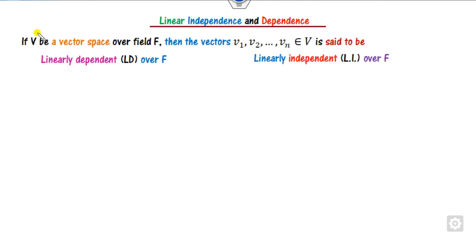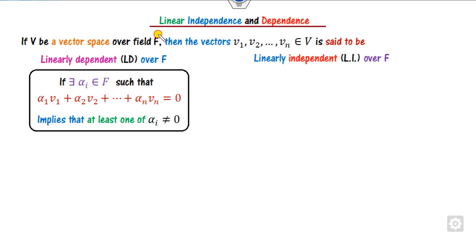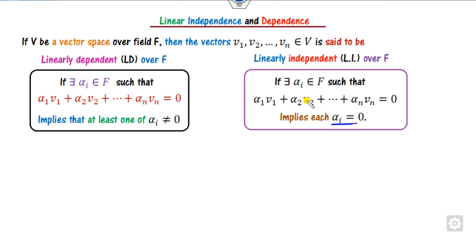Let V be the vector space over field F. Then n vectors v1, v2, ..., vn are said to be linearly dependent or linearly independent over this field as follows: if there exist scalars alpha_i from this field such that the linear combination equals zero, and at least one alpha_i is non-zero, then we call them linearly dependent. On the other hand, if all alpha_i's are zero for each i, then we say they are linearly independent.